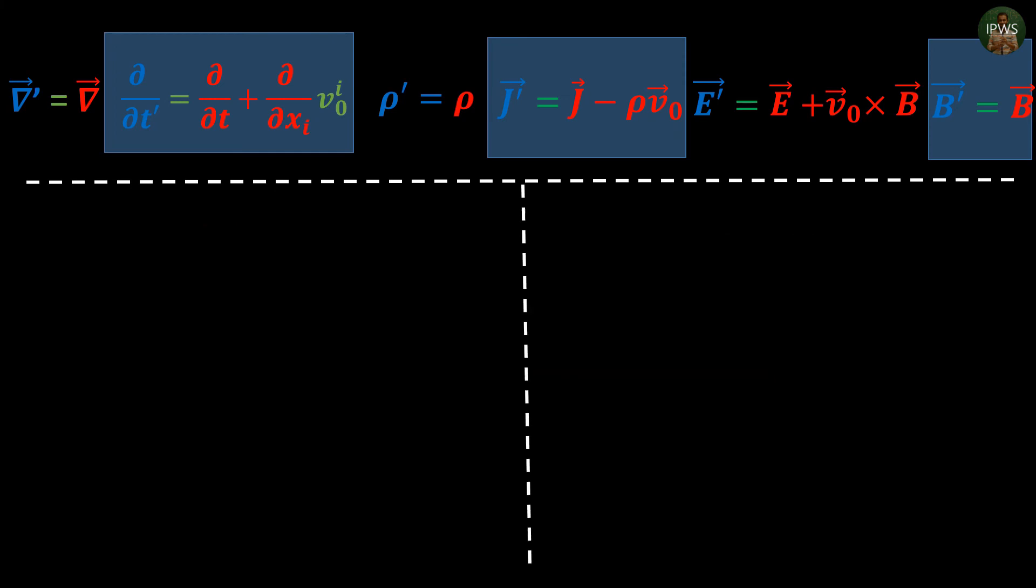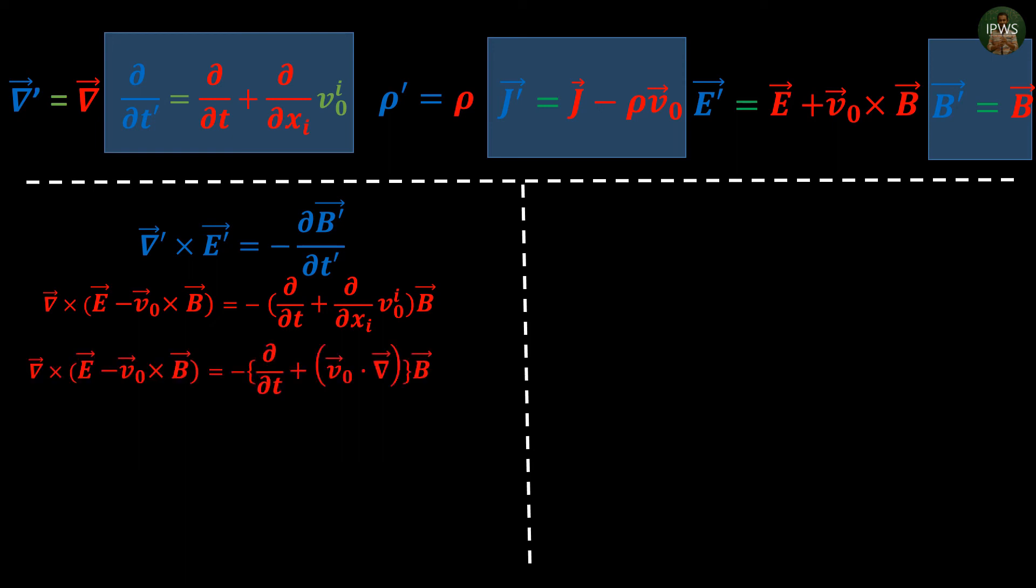Our third equation is Faraday's law of electromagnetic induction. We replace both electric field and partial time derivative operator and expand both sides. Now if you take v0 out of curl operator you will be making a huge mistake. We will do that properly using properties of curl operator on cross product.